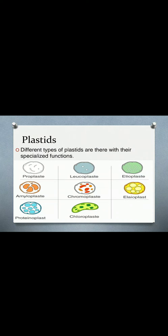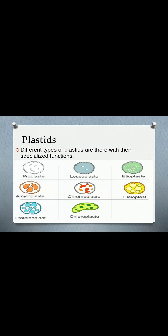Chloroplasts, etioplasts, and amyloplasts all belong to the category of plastids. They share the same genome but differ in their structure and function. Chloroplasts are found in specialized cells and carry out photosynthesis; they have internal thylakoid membranes. Other plastids that lack green pigment are able to form amino acids, fatty acids, lipids, plant hormones, nucleotides, vitamins, and secondary metabolites.